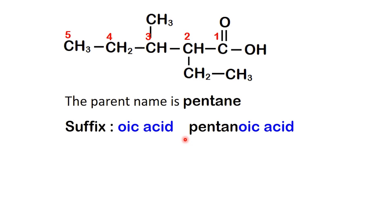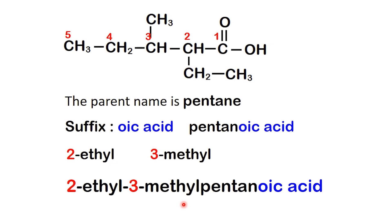Now, let's look at the branches. On carbon 3, we see a methyl group. On carbon 2, there's an ethyl group. When naming, we always put substituents in alphabetical order, so ethyl comes before methyl.